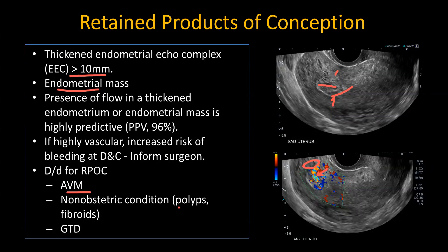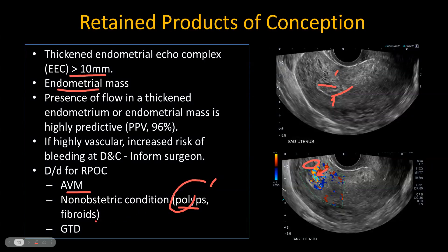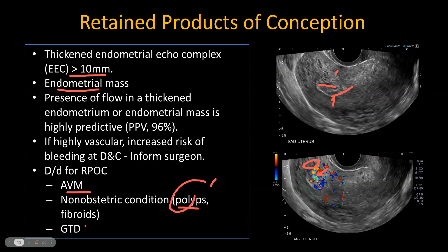Other non-obstetric conditions such as polyps and submucosal fibroids can mimic RPOCs. Polyps will usually have a single vascular stalk, and fibroids would not demonstrate prominent Doppler vascularity in most cases. Finally, gestational trophoblastic disease is another differential, but these would usually be larger, may show cystic changes, and clinically the patient will have a persistently elevated beta-HCG, whereas in RPOC the beta-HCG would drop.